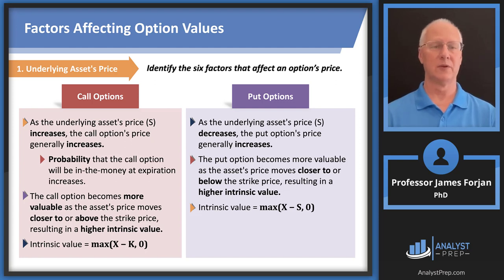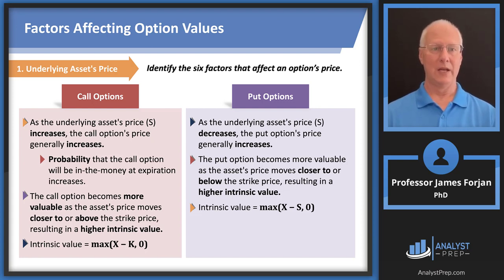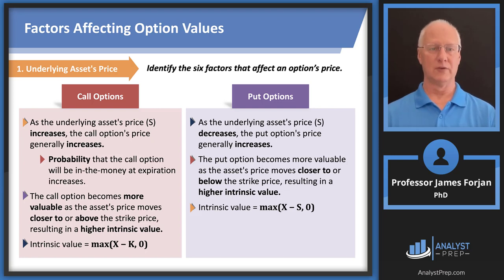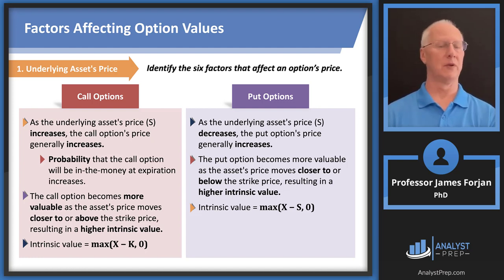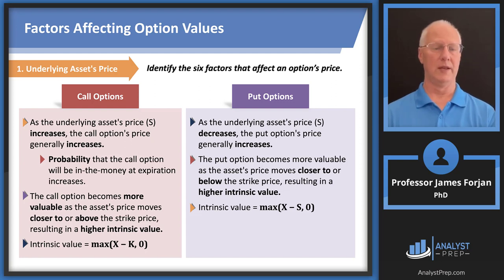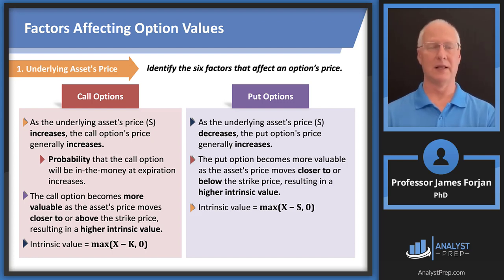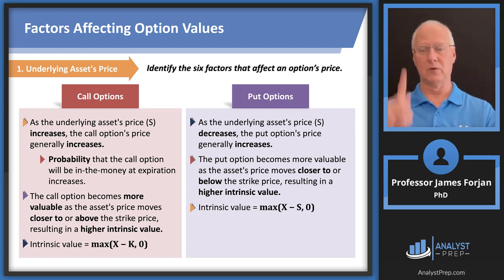The underlying asset's price: take the simple example of a share of stock trading at $100 with both a call option and a put option written on it at an exercise price of $100 — that's an at-the-money option. If we buy the call option, we're betting that the underlying asset price goes up. So if the stock price goes up to $110 or $120 or $200, the call price will increase. On the other hand, with a put option giving us the right to sell at $100 when the stock is trading at $100, we're betting that the stock price falls. Those two are opposites.